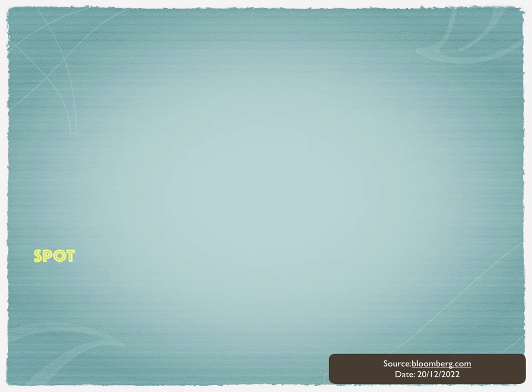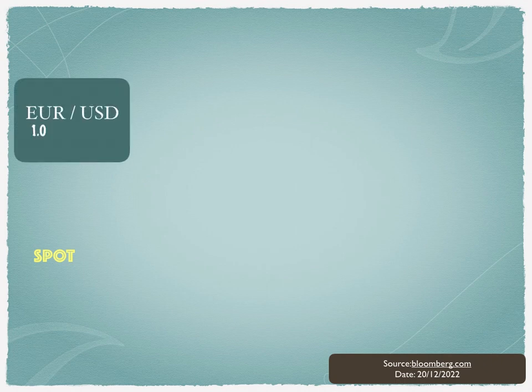On 20th December 2022, when I sourced the data from Bloomberg, the actual spot rate of EUR/USD was 1.0615 / 1.0622. This means 1 EUR is equal to 1.0615 USD. If you're a market maker, you can bid at 1.0615 and sell at 1.0622.